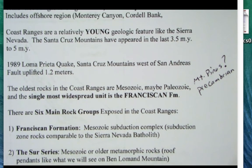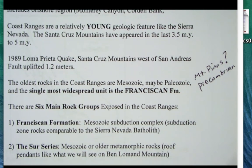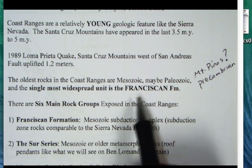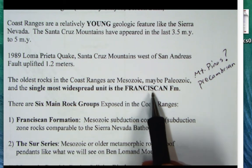The oldest rocks in the Coast Ranges are Mesozoic, maybe some Paleozoic ones. The single most widespread unit is the Franciscan Formation — also called the assemblage or complex — but it's really an accretionary wedge subduction zone complex that we'll talk about here.